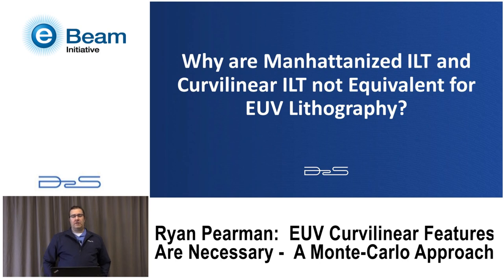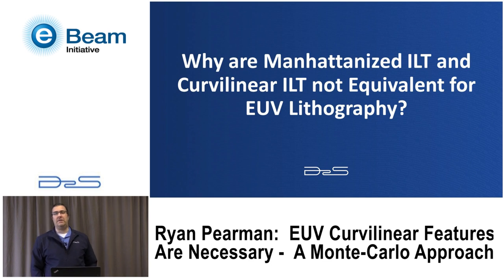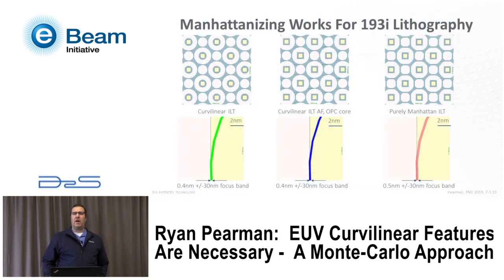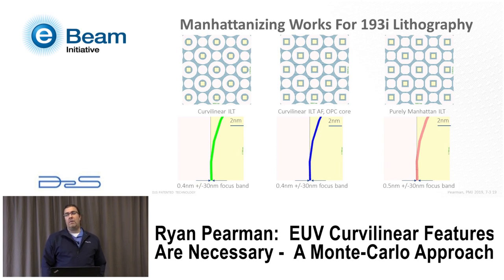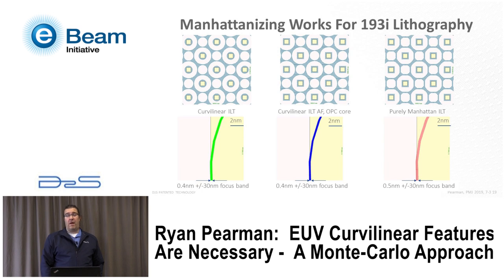Now let's talk about why we can't use Manhattanized ILT and curvilinear ILT equivalently for EUV lithography — they're not going to be equivalent. To show why, I go back to the previous study that showed why they were equivalent for immersion lithography. I'm showing three masks here: a purely curvilinear mask on the left, a curvilinear assist feature in the middle, and a purely Manhattanized ILT mask on the right. Looking at the ±30nm focus windows, they all look the same.